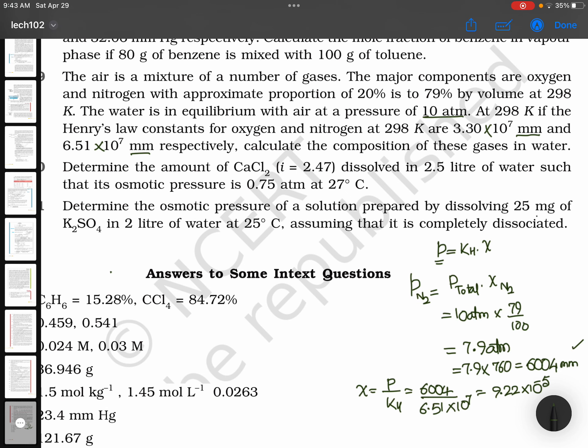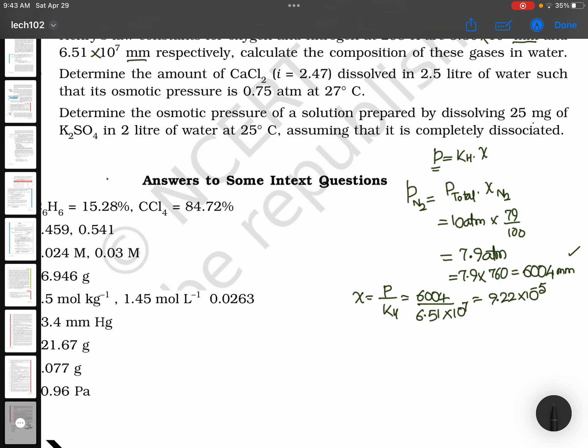That is a small fraction of nitrogen. Same way, for partial pressure of oxygen, same thing we are going to do. P total times mole fraction of oxygen: 10 atmospheres times 20 by 100.